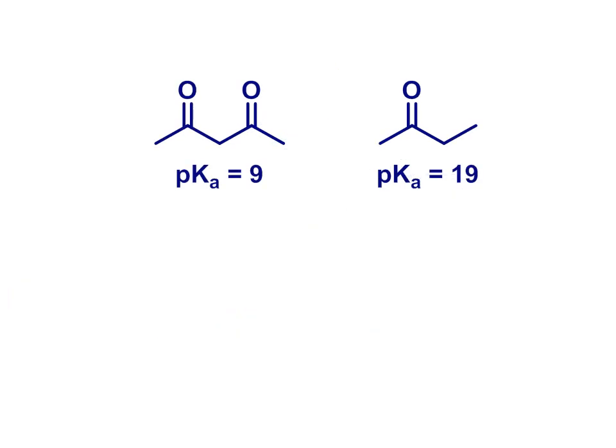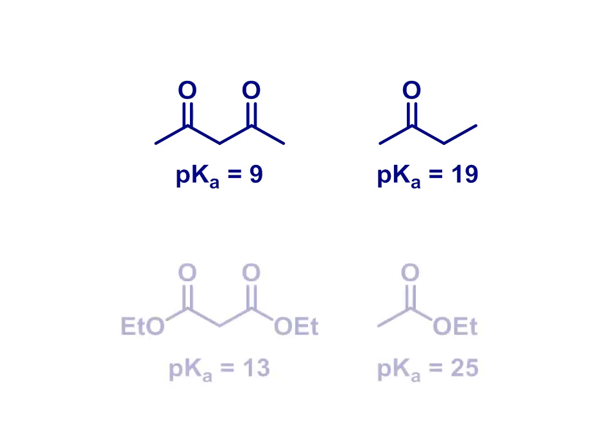We can get a handle on this effect by comparing the pKas of these carbonyl compounds. Remember that the pKa gives us a quantitative measure of how easily deprotonated a species is. In other words, how stable the resulting carbanions might be. You can see that the dicarbonyl compound on the left is significantly more acidic or more easily deprotonated than the monocarbonyl species on the right. A similar effect is borne out for the corresponding esters.